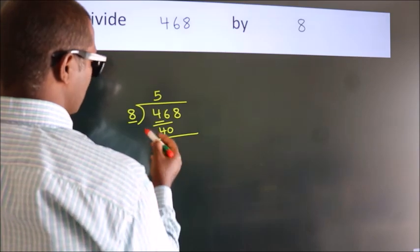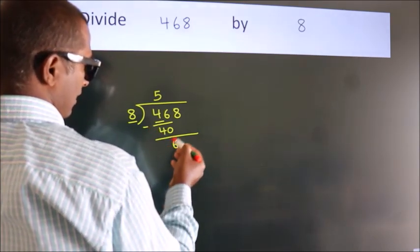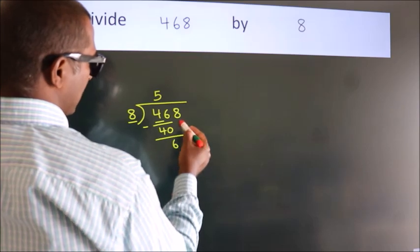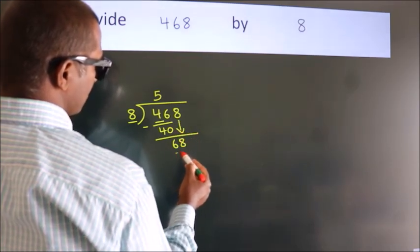Now we should subtract, we get 6. After this, bring down the beside number. So 8 down, so 68.